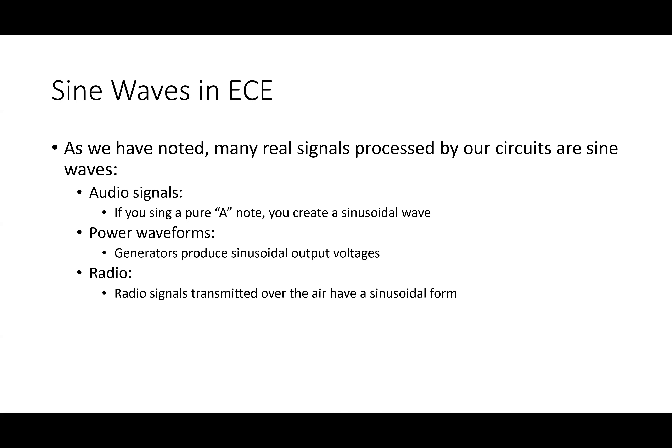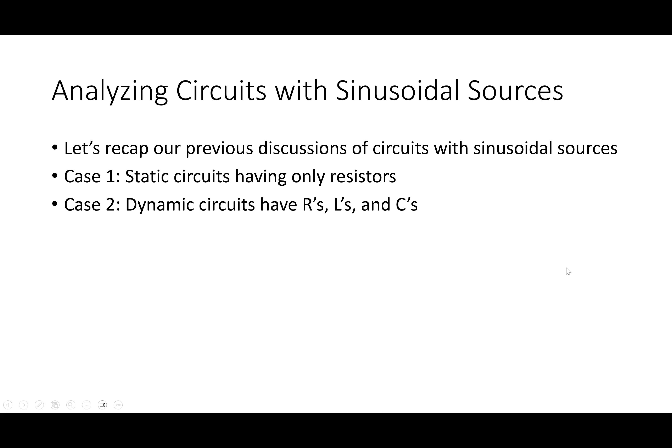Last week I gave a couple of examples where I had sinusoidal sources and I did static circuits and dynamic circuits. The difference: static has only resistors, so whatever happens at time t equals zero happens and it never changes. Dynamic circuits have R's, L's, and C's.